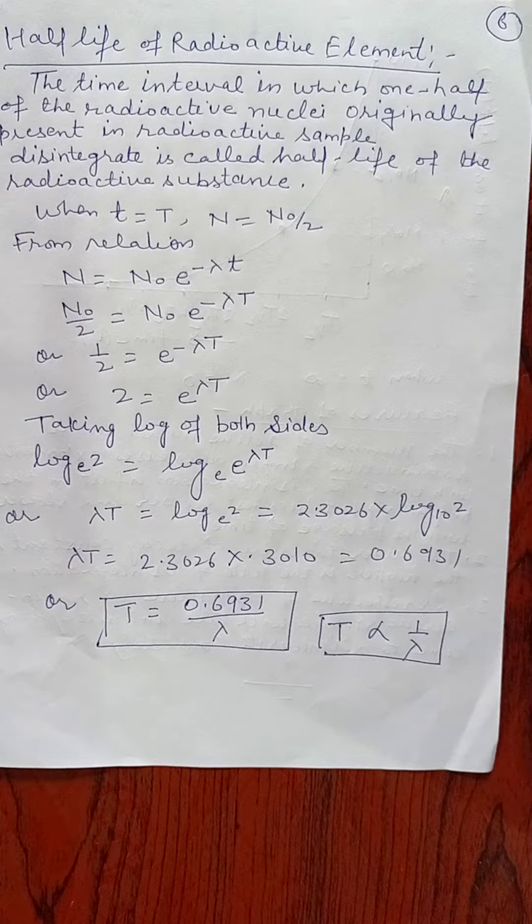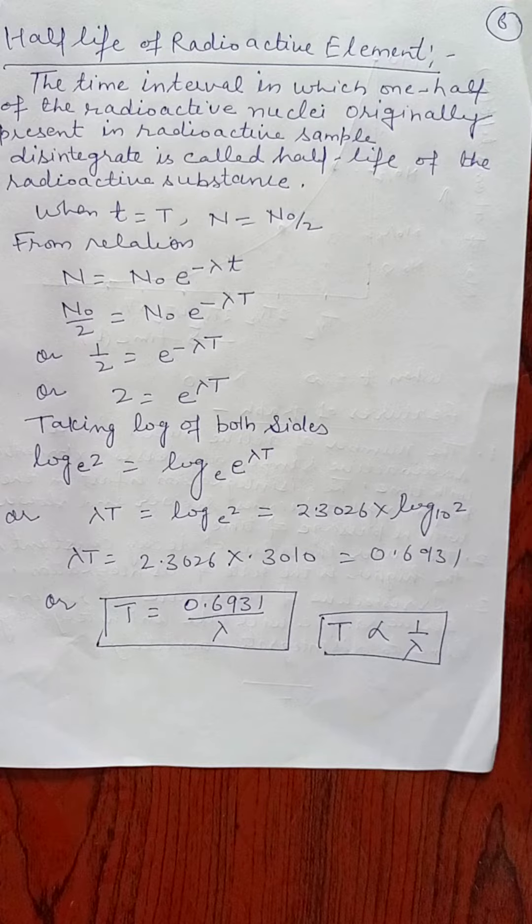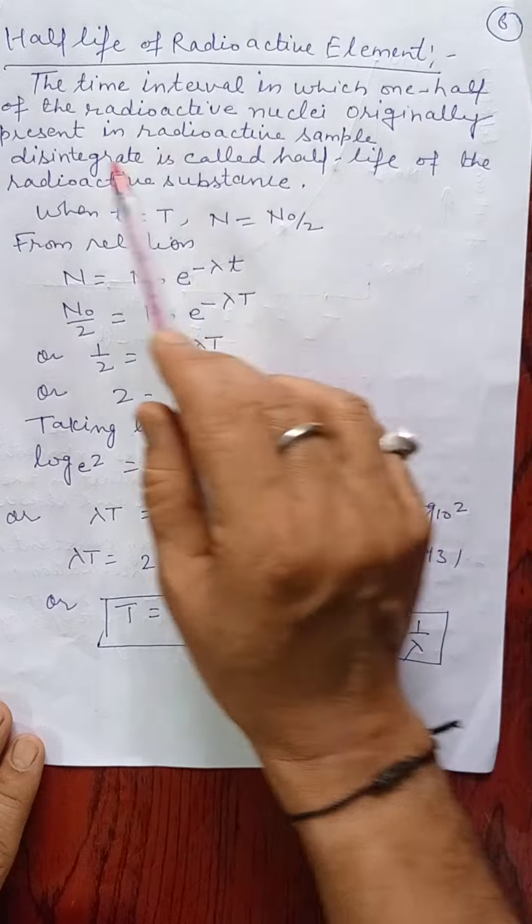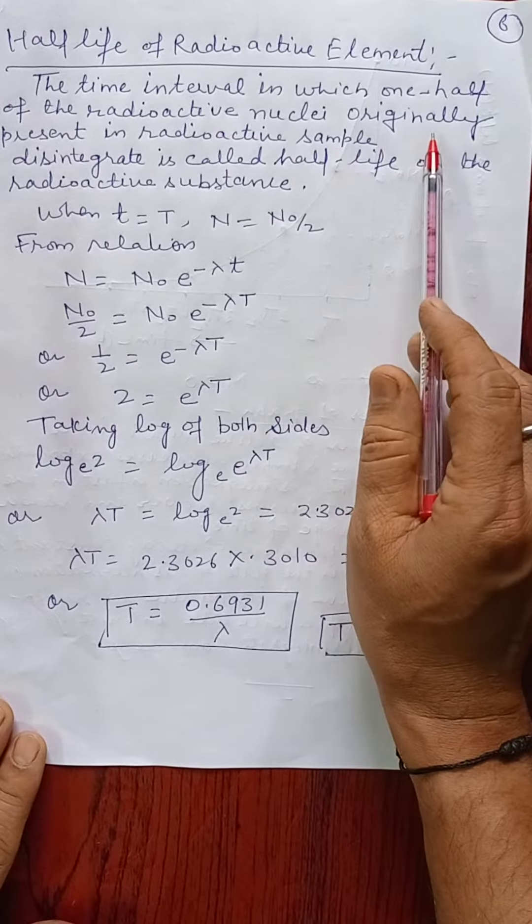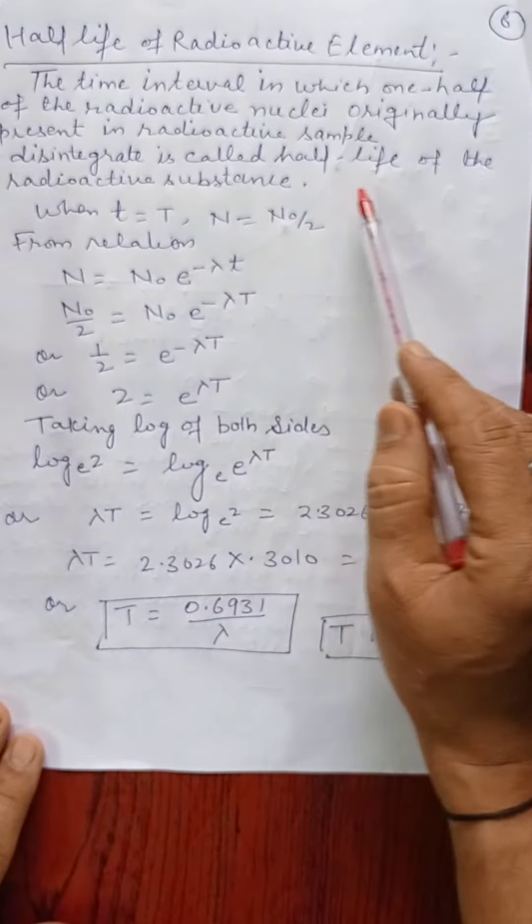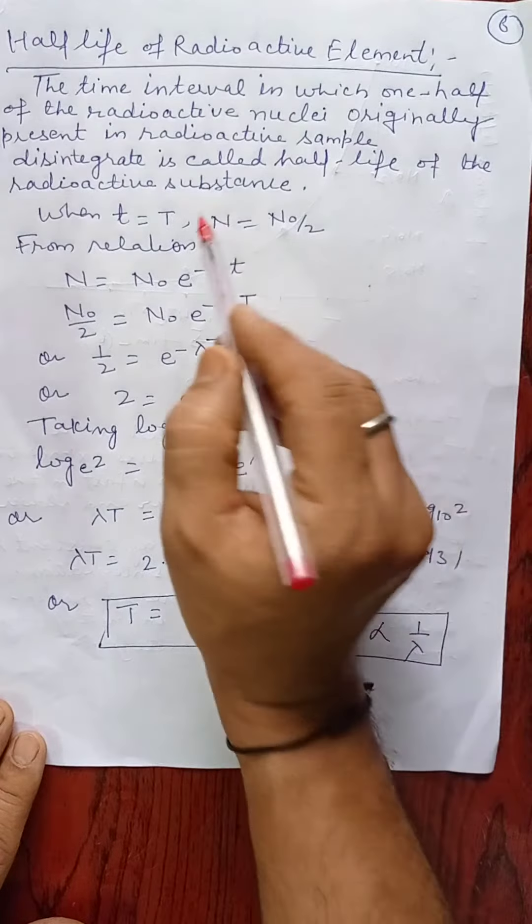Hello everybody, today we will discuss the half-life of a radioactive element. The time interval in which one half of the radioactive nuclei originally present in a radioactive sample disintegrate is called half-life of the radioactive substance.